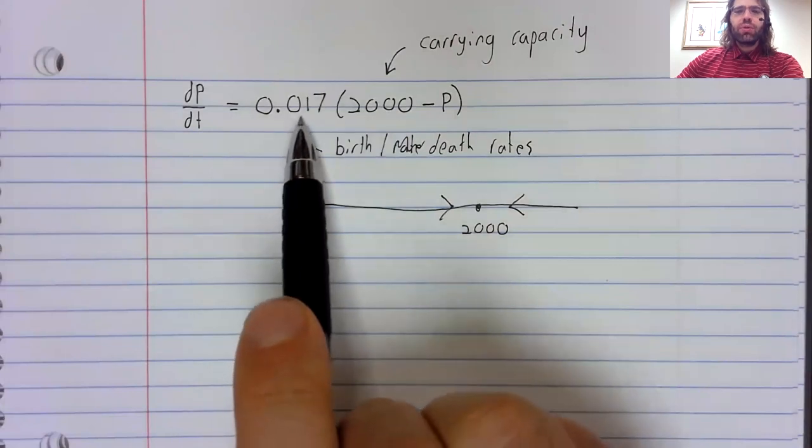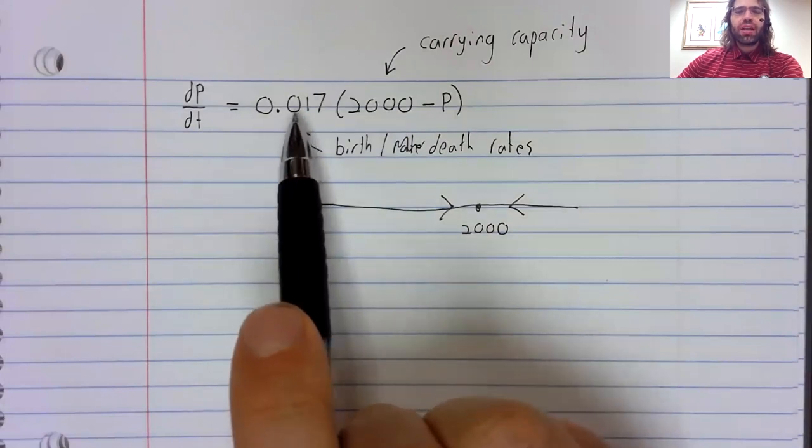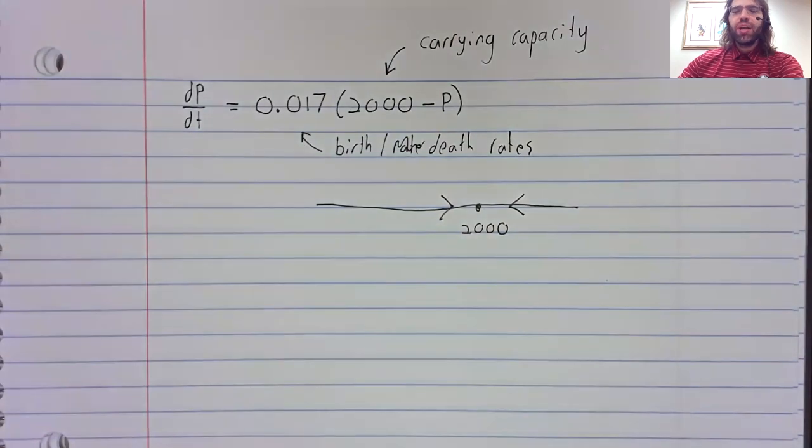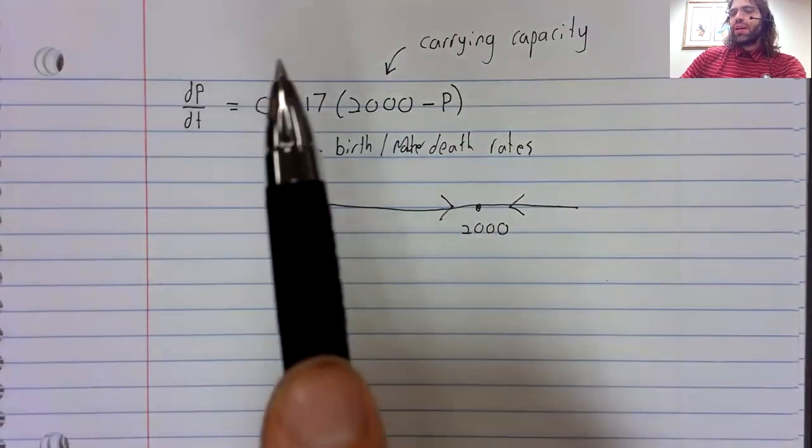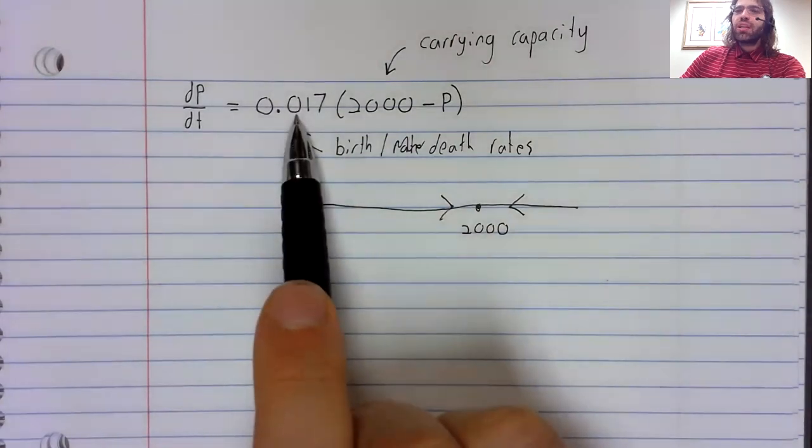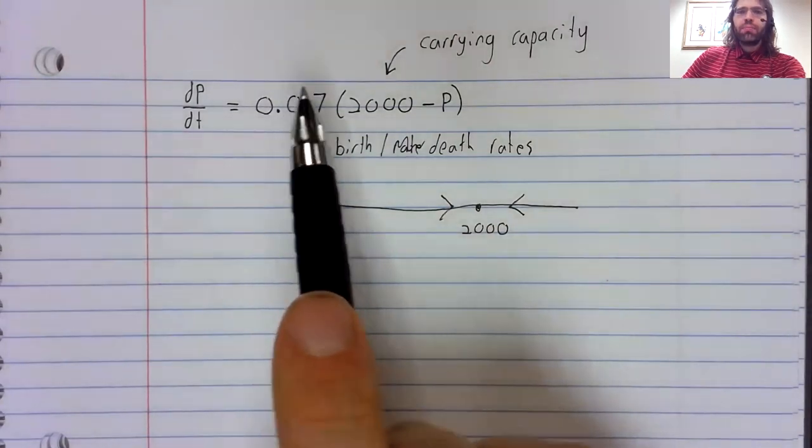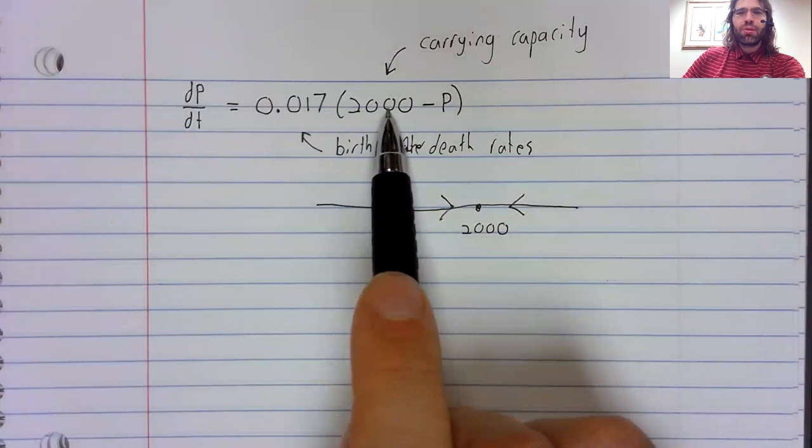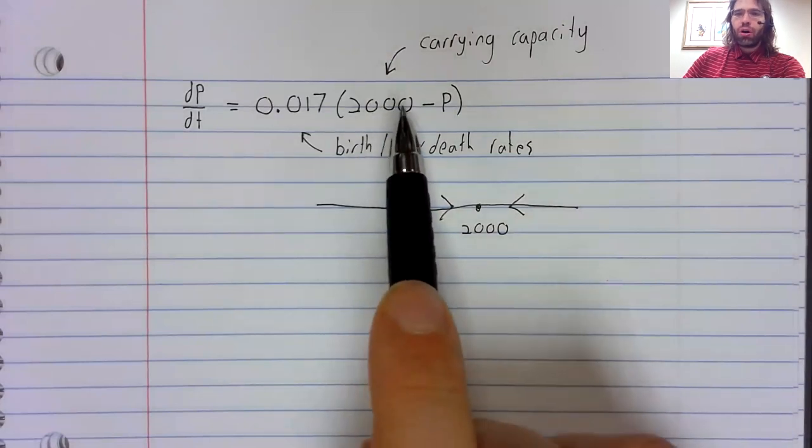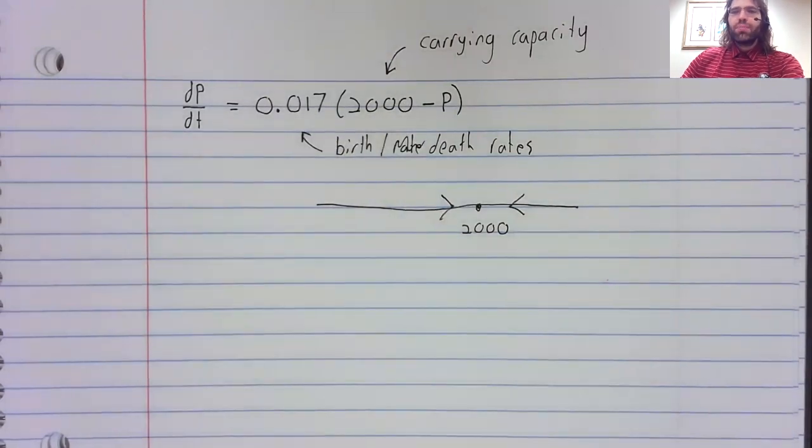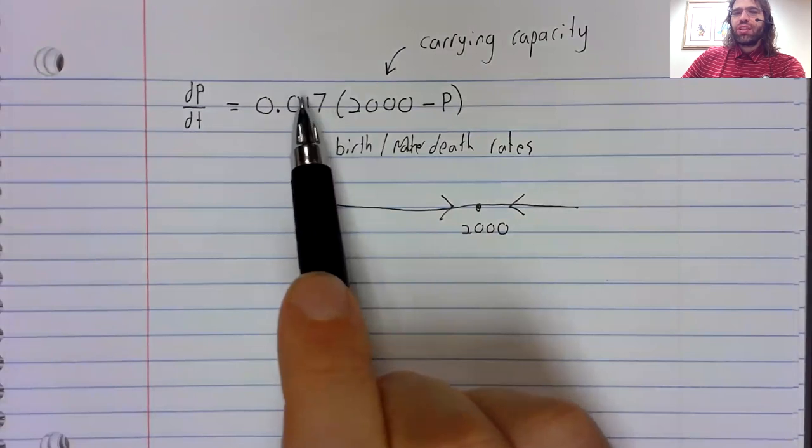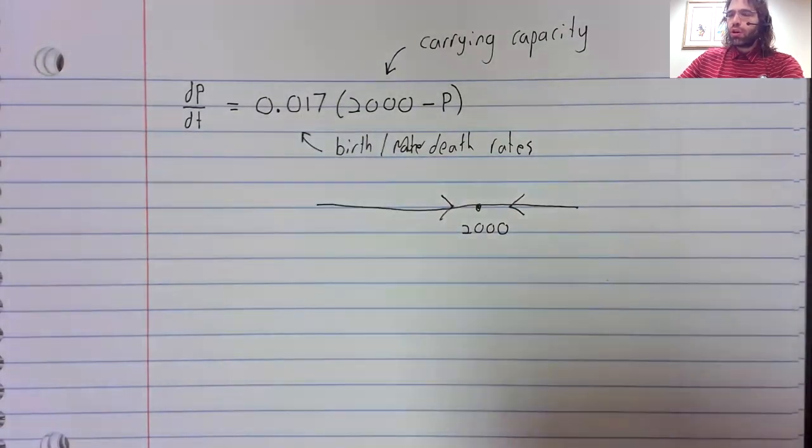We certainly don't know exact birth and death rates. So we have to go into this assuming that this number is wrong and this number is wrong. But in many ways, it doesn't matter if these numbers are wrong.